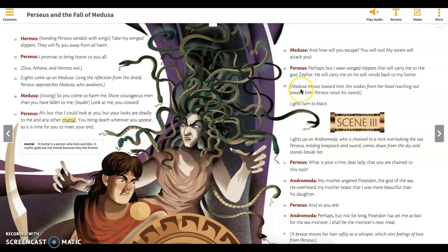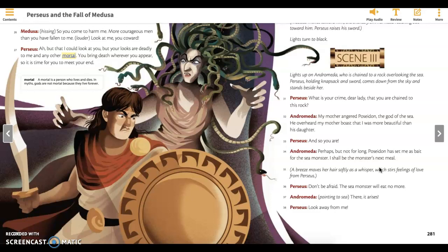Now, I also want us to look down here, once we get into scene 2, and there is a stage direction that includes a simile. I want you to take just a second to look at some of these stage directions. Remember, they're in parentheses. And figure out which one includes a simile. Remember, a simile is comparing two different things using the words like or as. So down here at section 35, a breeze moves her hair softly as a whisper, which stirs feelings of love from Perseus. So there the simile is her hair, a breeze moves her hair as softly as a whisper. So that helps me imagine just how gentle this breeze is. It's very calming. It's barely moving it. The breeze is kind of compared to a whisper.